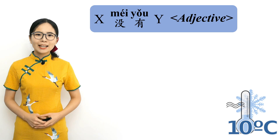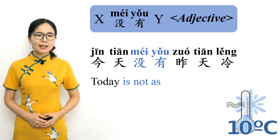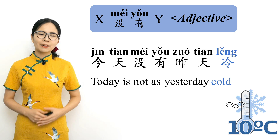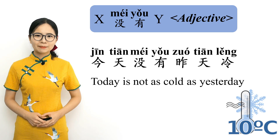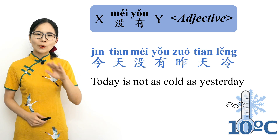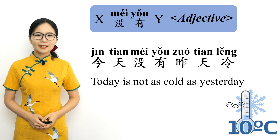Today is not as cold as yesterday: 今天没有昨天冷. 今天 means 'today,' 没有 means 'is not as,' 昨天 means 'yesterday,' and 冷 is an adjective meaning 'cold.' Literally and in meaning: today is not as cold as yesterday. Please repeat after me. 今天没有昨天冷. Today is not as cold as yesterday.